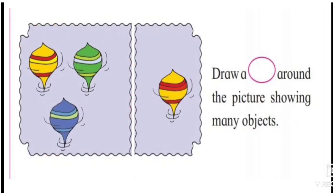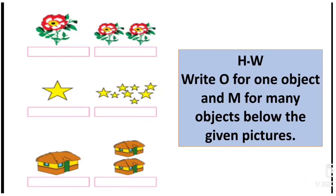Dear students, I hope you understood the concept of one and many. Today's homework is: you have to write 'O' for one object and 'M' for many objects below the given pictures.